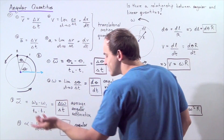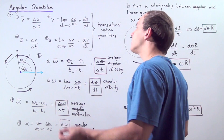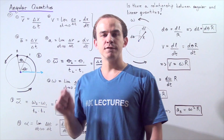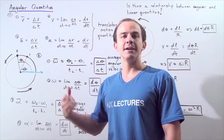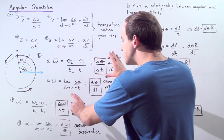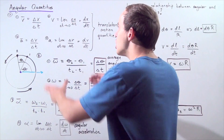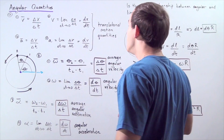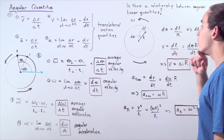To get our instantaneous angular acceleration, we take the derivative of the angular velocity function — or equivalently, the limit of the ratio as change in time approaches zero. We see that these four angular quantities are analogous to the four linear quantities.